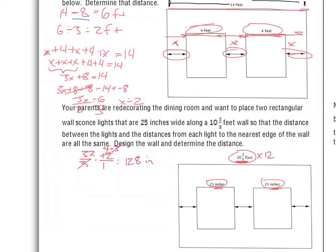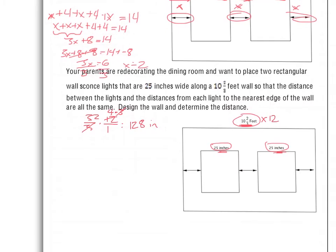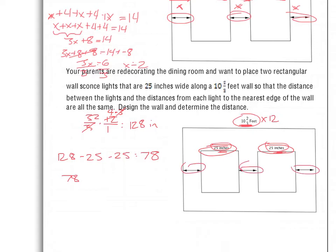If we think about this arithmetically, we have a total of 128 inches. 25 inches is taken up by this poster, and 25 inches is taken up by this poster. That leaves 78 inches to work with. I have 3 spaces to evenly space that out between. If I divide by 3, that should give me a solution of exactly 26 inches.